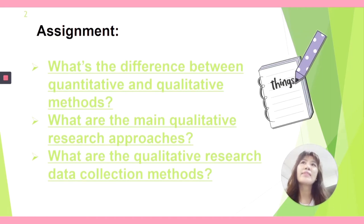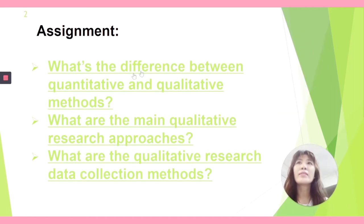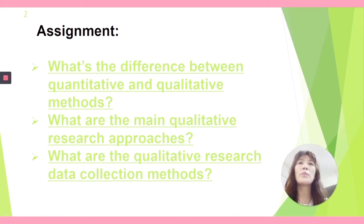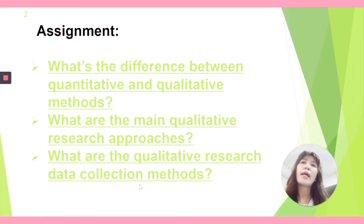Your assignment at the end of this lesson will be: first, what's the difference between quantitative and qualitative methods? You need to write about the differences between two methods. And then the second assignment is, what are the main qualitative research approaches? At the end of the lesson, you will know what are the main qualitative research approaches, so you are going to write from your knowledge gained from this lecture. And the last assignment will be, what are the qualitative research data collection methods.